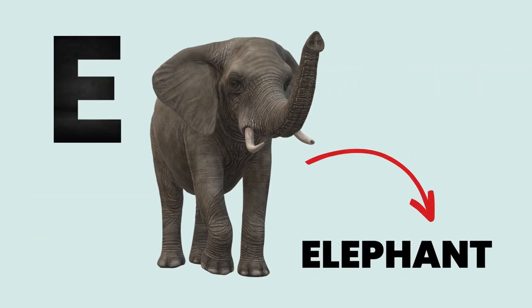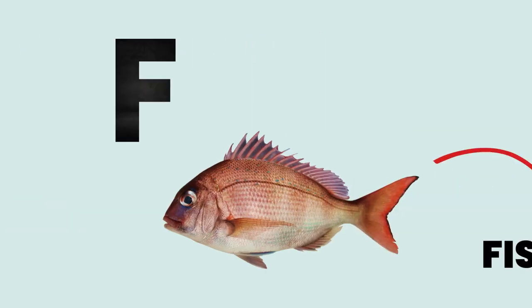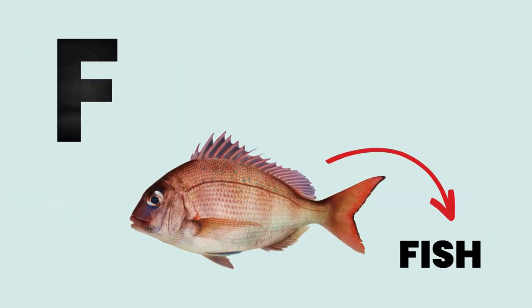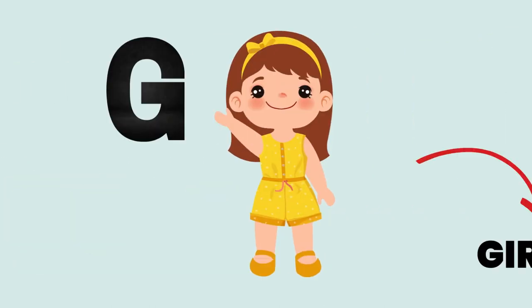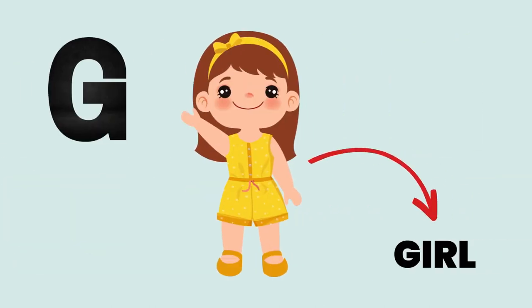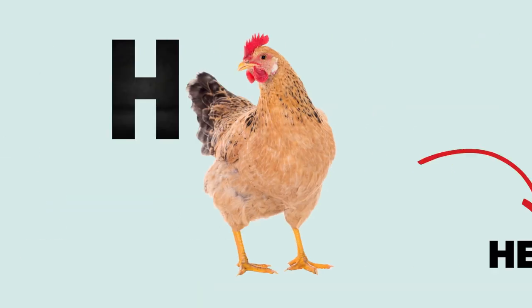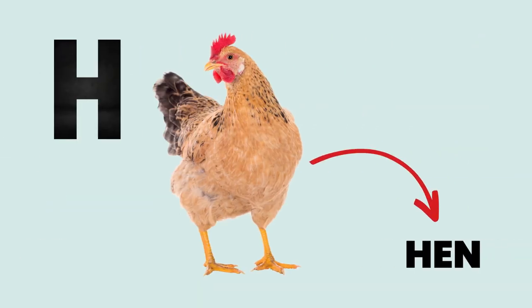A for Elephant. F for Fish. G for Girl. H for Hen.